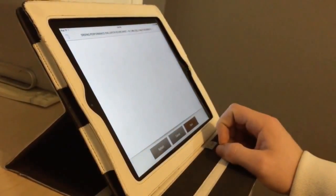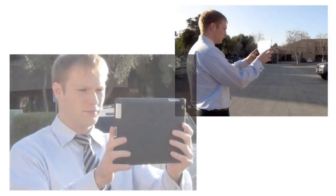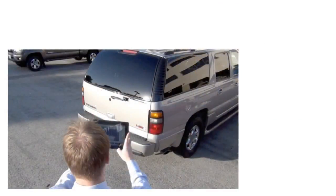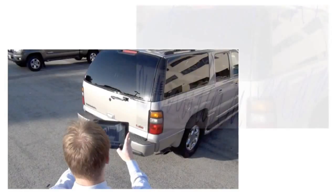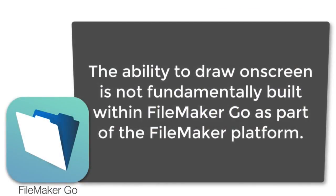A common situation is where you're working on a customer project and maybe you need to take a photo with your iOS device. Taking a photo on the iPhone or iPad and incorporating that photo into a FileMaker application is pretty easy. But what if you wanted to make a visual notation on the screen — to actually draw on top of the photograph to make notes or communicate some additional information? Well, fundamentally, that's not part of the FileMaker Go product.